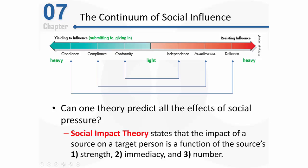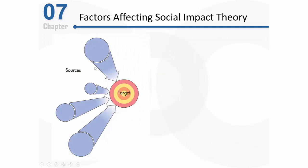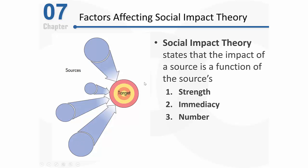Social impact theory states that the impact of a source of influence on a target person is a function of three primary factors: the source's strength, the immediacy of the target — which essentially talks about the psychological distance that the source is from the target — and the number of sources that exist. Social impact theory states that the impact of that source is primarily a function of the strength of the source, the immediacy of the source, and the number of sources overall.